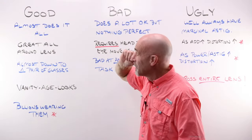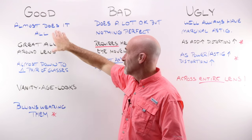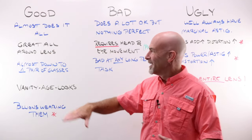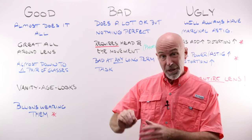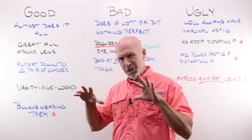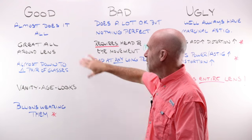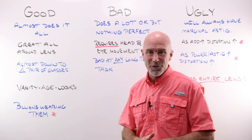The good. One of the good things about a progressive lens is that it almost does it all. It does have distance, it does have intermediate, it does have near, and it works pretty good for all of those things. So it kind of almost does it all. It is a really great all-around lens.